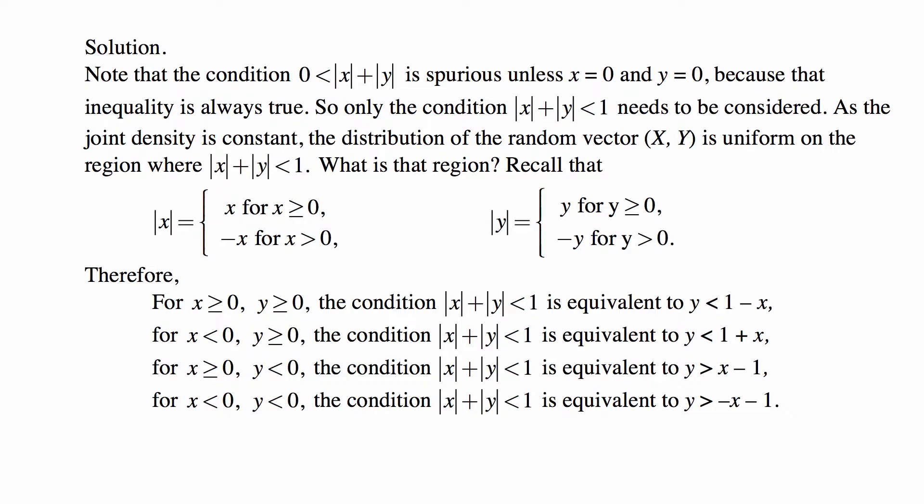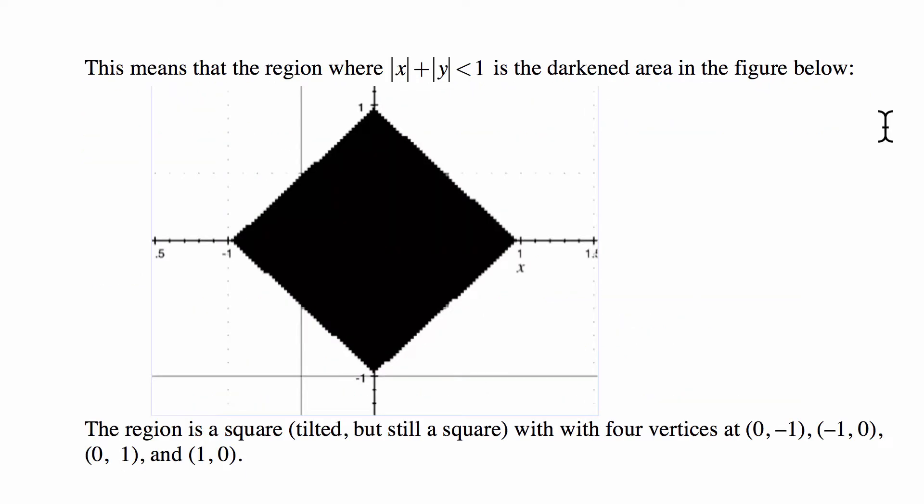For X less than zero and Y greater than or equal to zero, Y is below the line given by Y equals one plus X. For X non-negative and Y less than zero, Y is greater than X minus one, meaning Y is above the line Y equals X minus one. And for both X and Y less than zero, Y is greater than negative X plus one. So it's four different conditions in four different quadrants, and together they define the region where the absolute value of X plus the absolute value of Y is less than one.